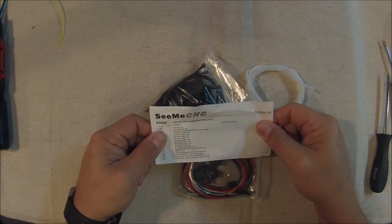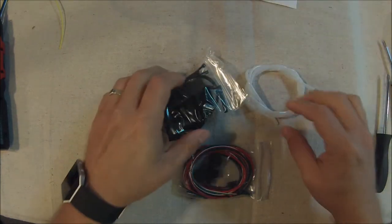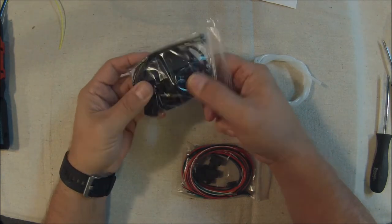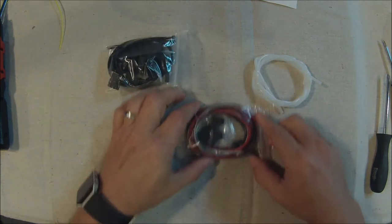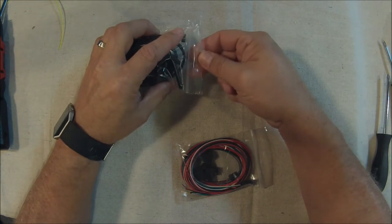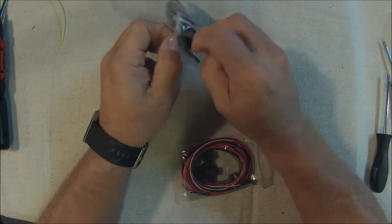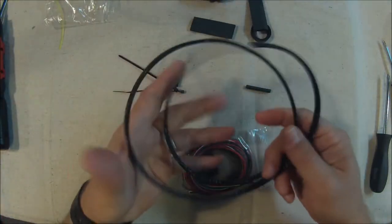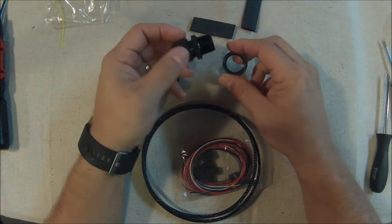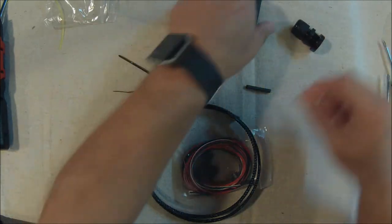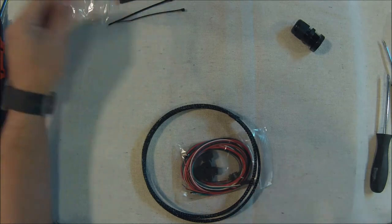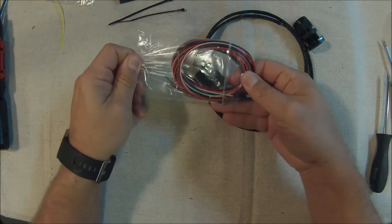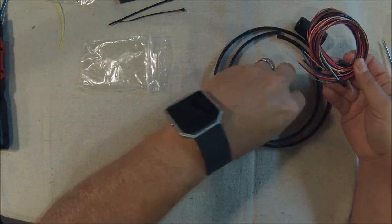We're going to start with the hot end whip pack, which includes a Bowden tube, the mesh loom, bulkhead connector, and wires. For this bit we need to get the loom out of the package and gather the wiring loom and bulkhead connector. Set the heat shrink and other stuff aside, then get the wiring out of this package.